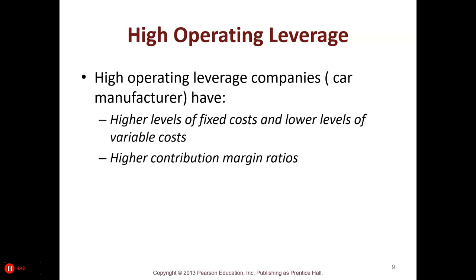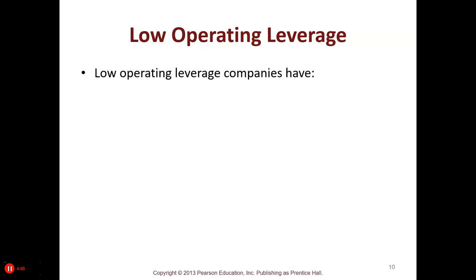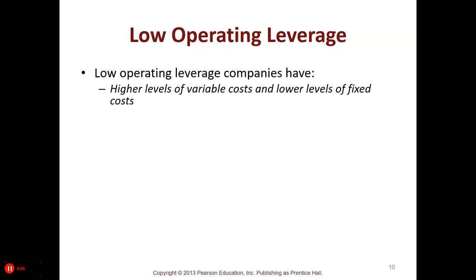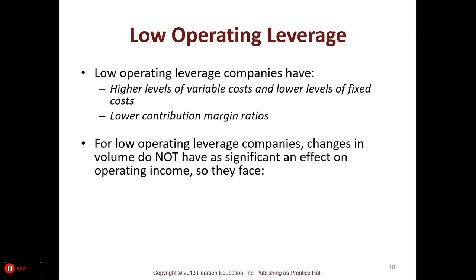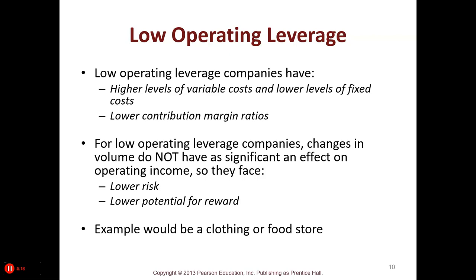High operating leverage companies have high contribution margin ratios, higher risk, and higher potential for rewards. Low operating leverage companies have high levels of variable costs and lower levels of fixed costs, resulting in lower contribution margin ratios. For low operating leverage companies, changes in volume do not have a significant effect on operating income — lower risk and lower potential for rewards. However, they need high volume. An example would be a clothing or food store.